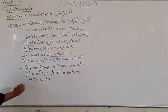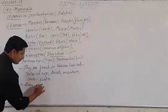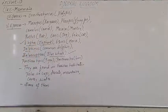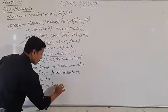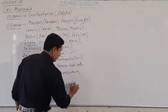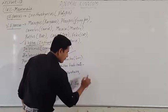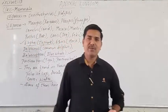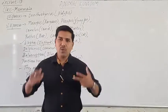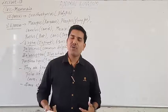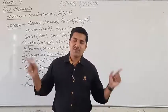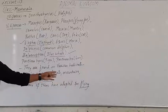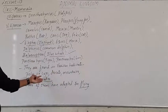Some mammals have adapted to flying — for example, bats. Bats fly, but they are mammals, not birds. Though they have a wing-like structure, it is made up of skin — called a patagium — whereas birds' wings are made up of feathers. Bats do not have feathers. So some mammals have adapted to flying mode of life, and some are present in water. This is their adaptation.